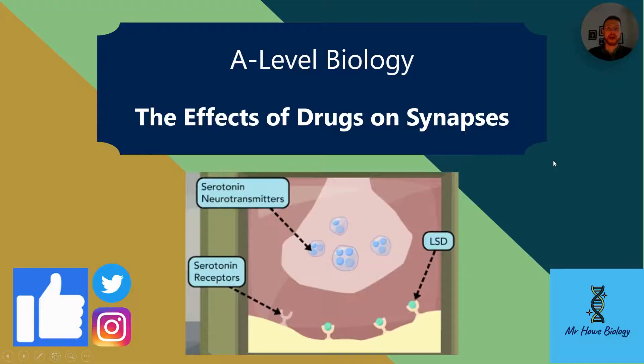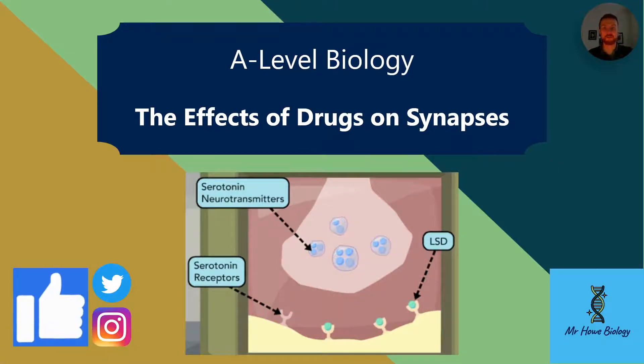Have you ever wondered how poison arrows can lead to paralysis, organ failure, and even death? Well, even if you haven't, it's coming up in the AQA A-level biology exam. So today we're talking about the effect of drugs on synapses.